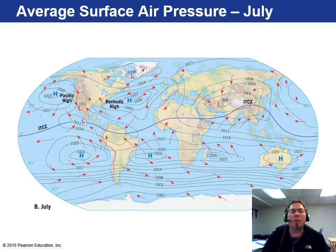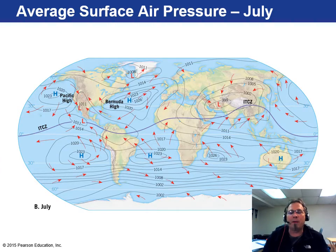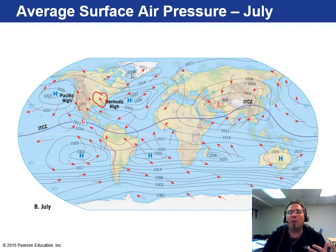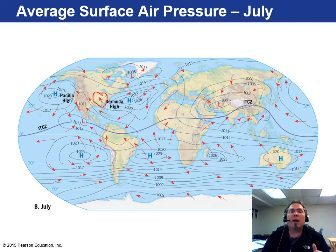Here's the opposite extreme — the July pressure map. In our area, winds are generally coming out of the southeast and southwest. In summer in Wisconsin, southeast winds can bring cooler temperatures by the lake since they're coming off the cold water, along with moisture. Southwest or northwest winds tend to be a little drier. In general, our winds are out of the southeast and south here in Wisconsin in the summer months.